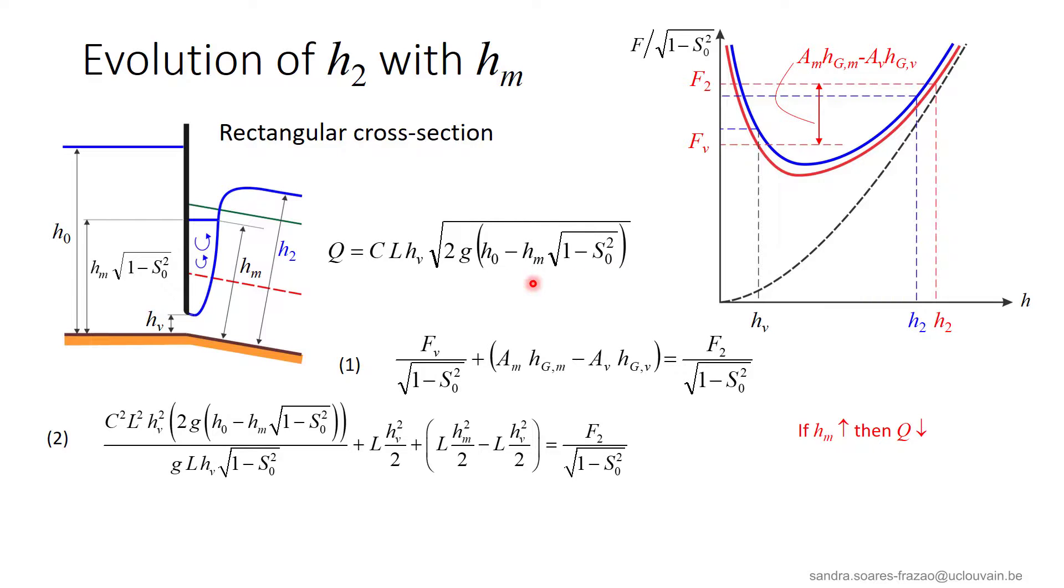We can see from the discharge equation that if we assume an increasing depth of the roller area HM, the discharge will decrease. And so the new specific force curve will be the red one, that is everywhere below the initial curve. The gate opening HV remains the same, so the corresponding specific force FV decreases.